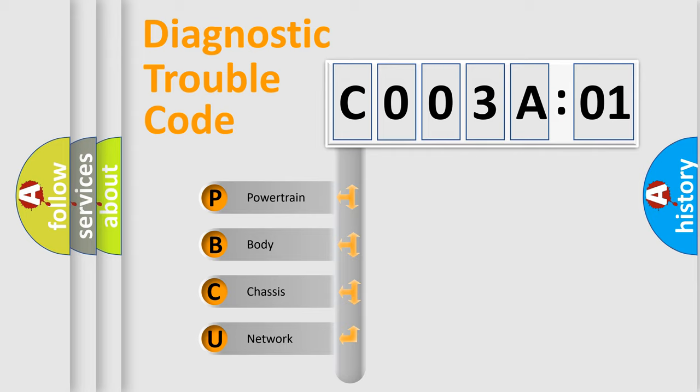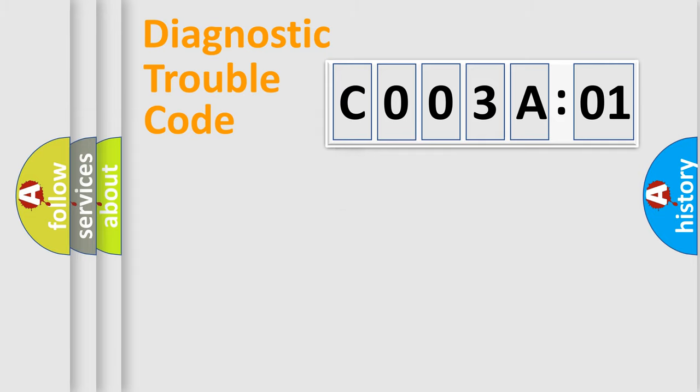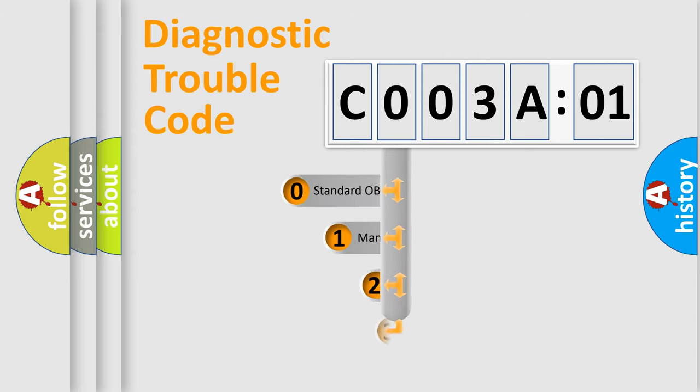We divide the electric system of the automobile into four basic units: Powertrain, Body, Chassis, and Network. This distribution is defined in the first character code.